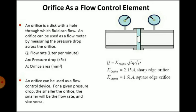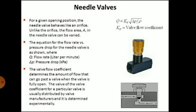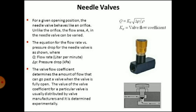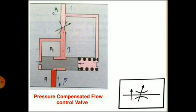The first type of non-compensating valve is the orifice as a flow control element. An orifice is a disc with a hole through which fluid can flow. An orifice can be used as a flow meter by measuring the pressure drop across it, or as a flow control valve for a given pressure drop. The smaller the orifice, the smaller will be the flow rate, and vice versa. For a given opening position, the needle valve behaves like an orifice, but unlike the orifice, the flow area A in the needle valve can be varied.